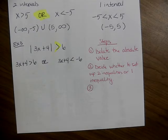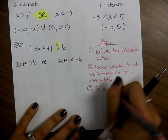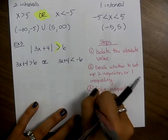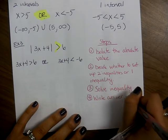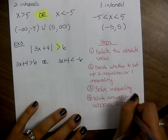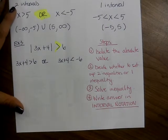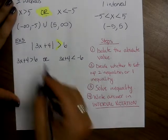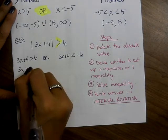Decide whether it's the greater or less than case, then set up your inequalities. Step 3: solve the inequalities. Step 4: write the answer in interval notation. From the first inequality, subtract 4 and divide by 3 to get x is greater than 2/3. Or subtract 4 to get 3x is less than negative 10, divide by 3, and get x is less than negative 10/3.